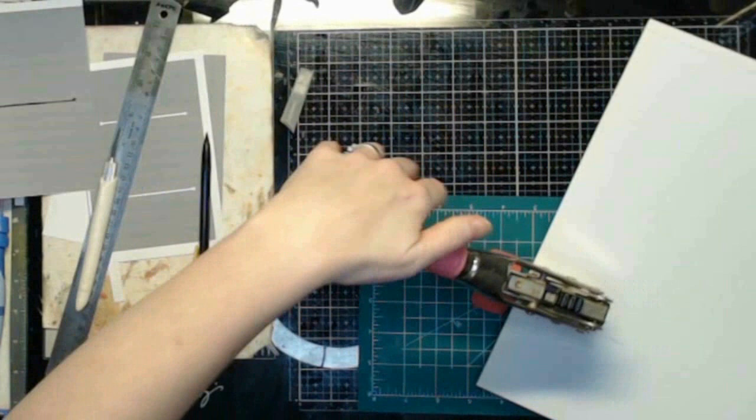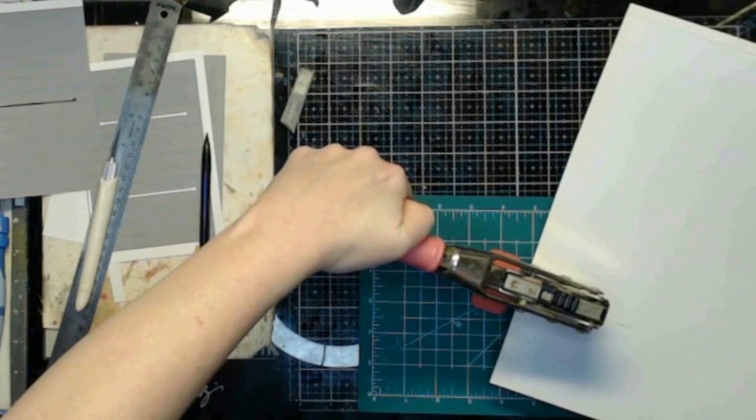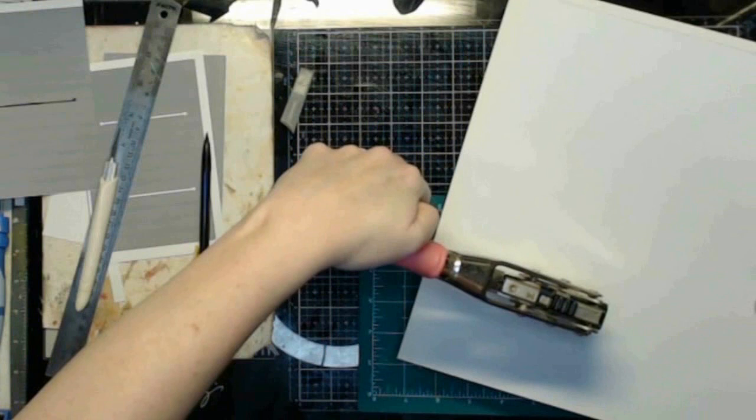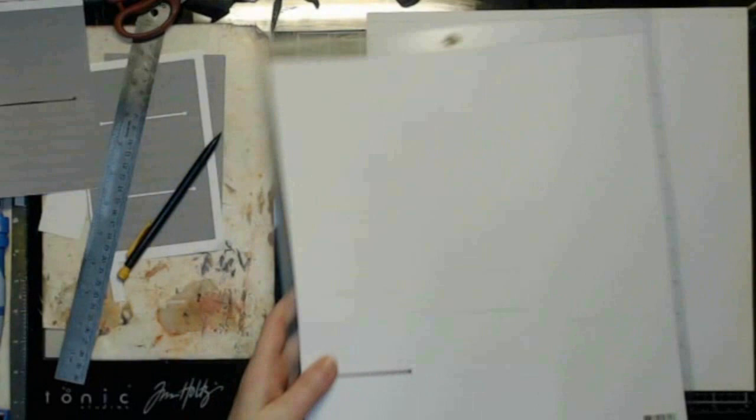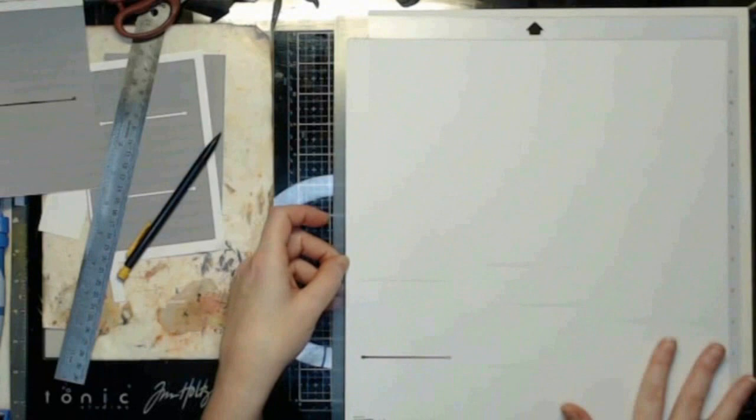And I just line my ruler up on my guidelines and carefully cut across where that opening is going to be. This, because it is a 12 by 12 sheet, is where if you have the Crop-A-Dial 2, you can punch much easier just because it allows for a deeper punch. So there you have it, a way to manually add your slots into your folio if you don't have an electronic cutting machine.